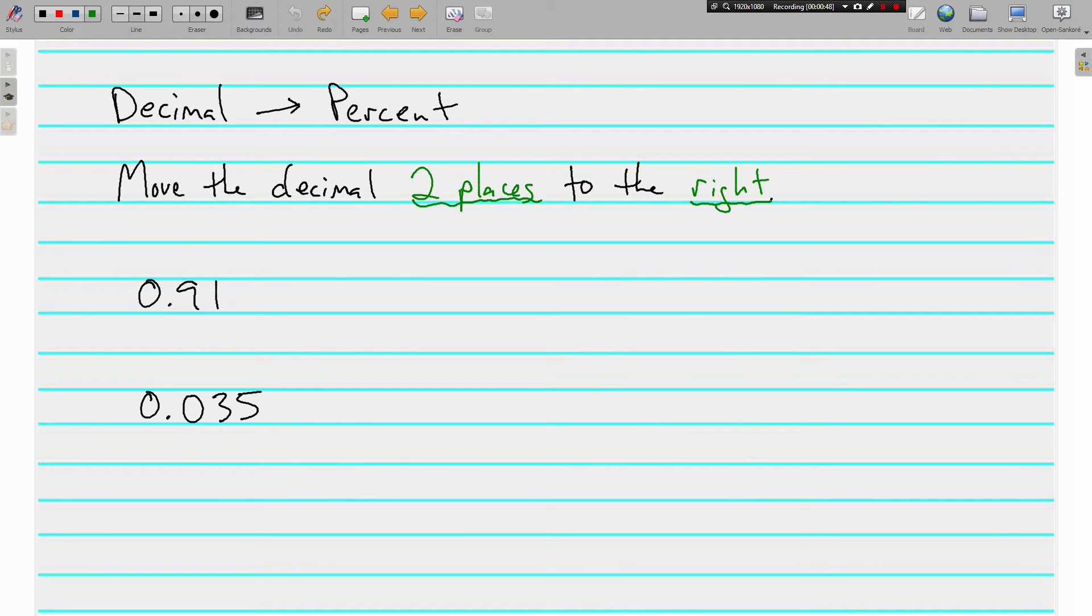Let's start by converting decimals into percents. It's real easy. You just move the decimal two places to the right. Now the reason that happens, the reason we move it two places to the right,